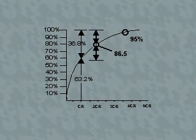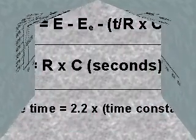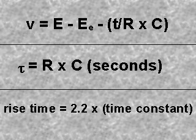The shape of the charging curve is an exponential function. The voltage across the capacitor at any given time is given by the equation V equals E minus E sub e minus quantity T divided by R times C. When the capacitor has reached a value of E,